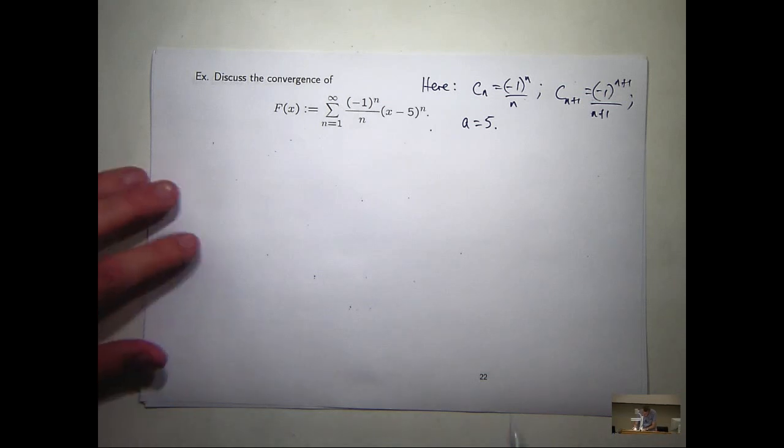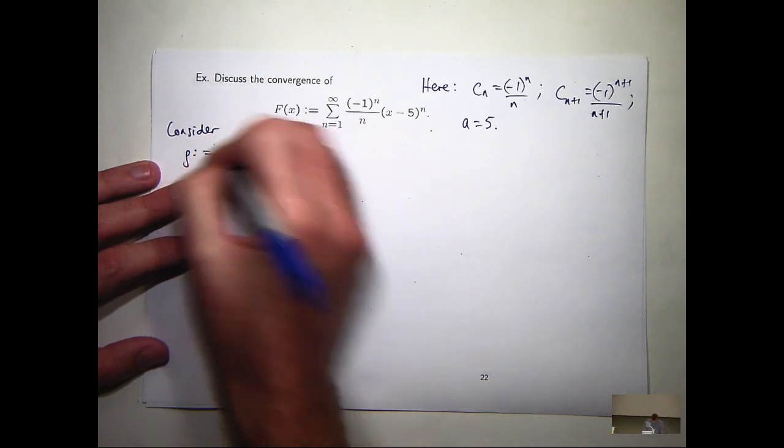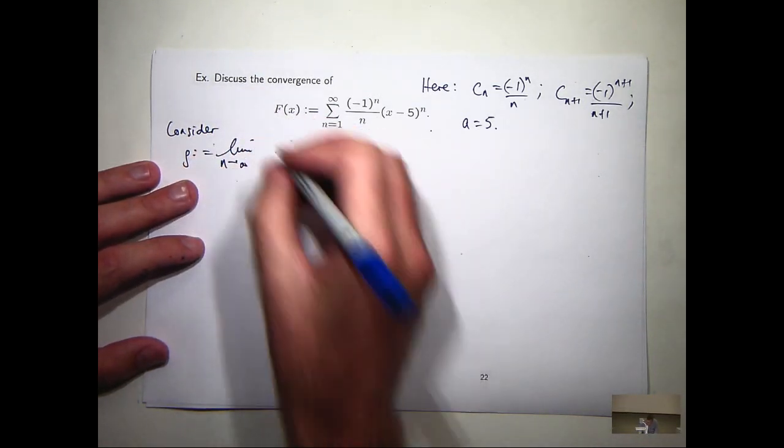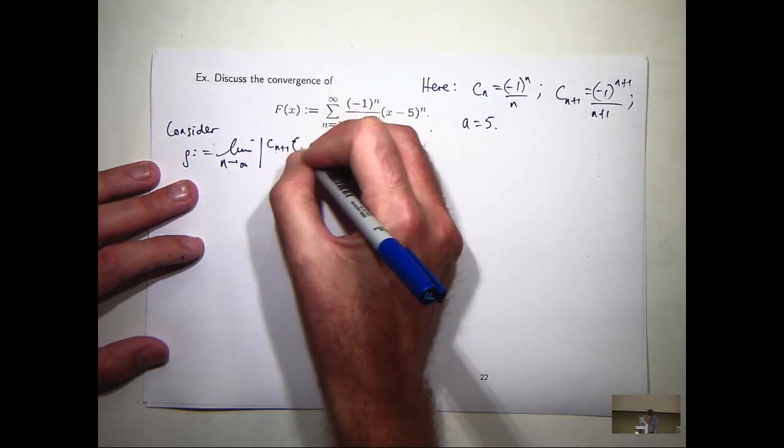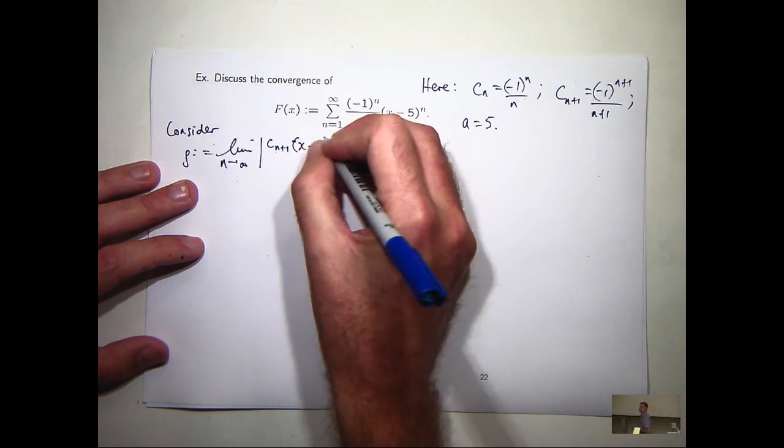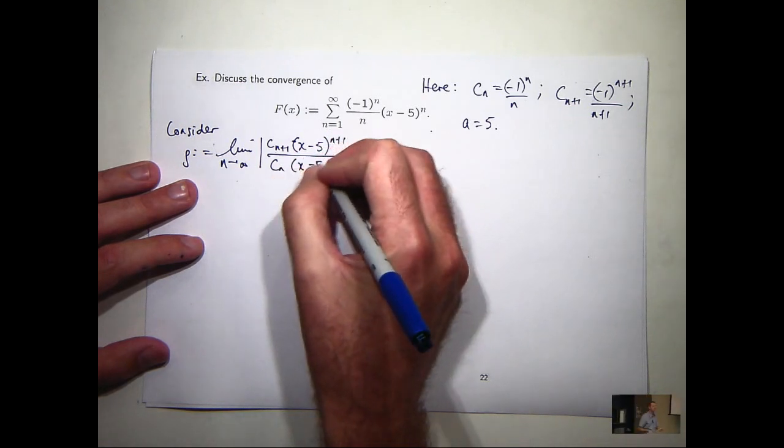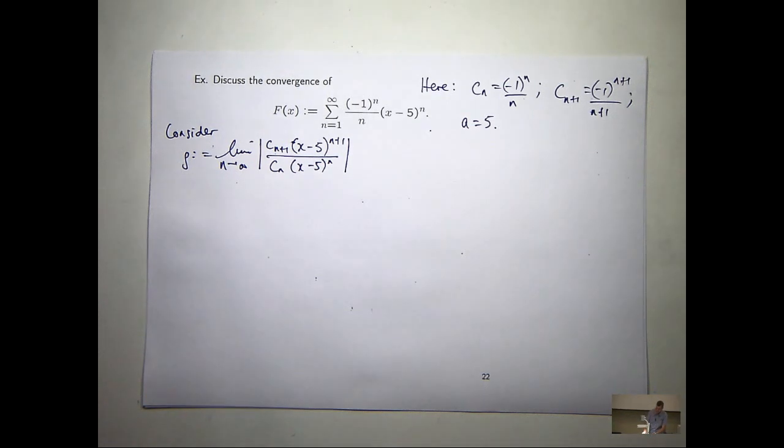So, consider, please, the limit of the following ratio. Okay, note instead of just x here, x to the n, x to the n plus 1, I've got x minus 5, all to the n plus 1. So, again, I can cancel off.